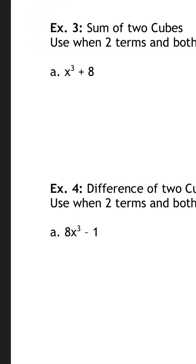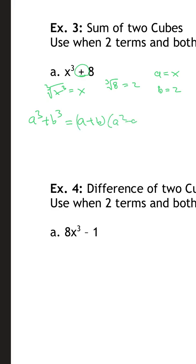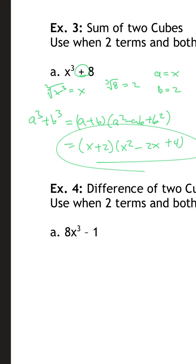For x³ + 8: the cube root of x³ is x, and the cube root of 8 is 2. Your perfect cubes to know are 1, 8, 27, 64, 125. So a = x and b = 2. Plugging into the formula: (x + 2)(x² − 2x + 4). x squared, then x times 2 is 2x, then 2² is 4. Once you plug it into the formula you are good to go.